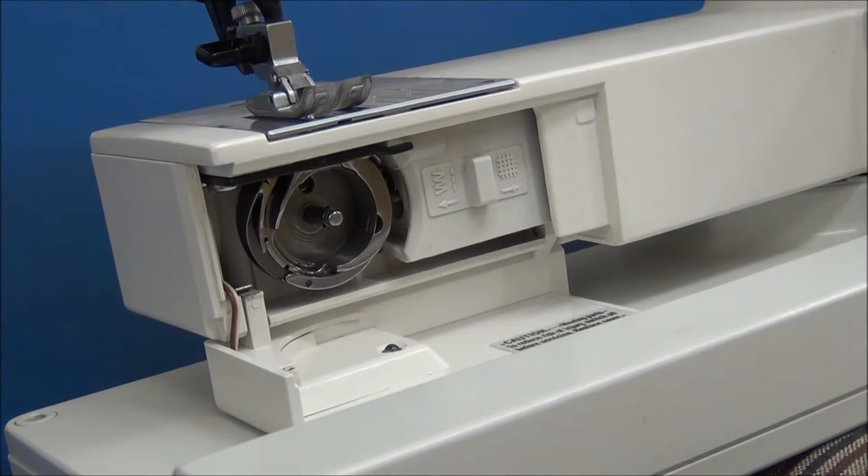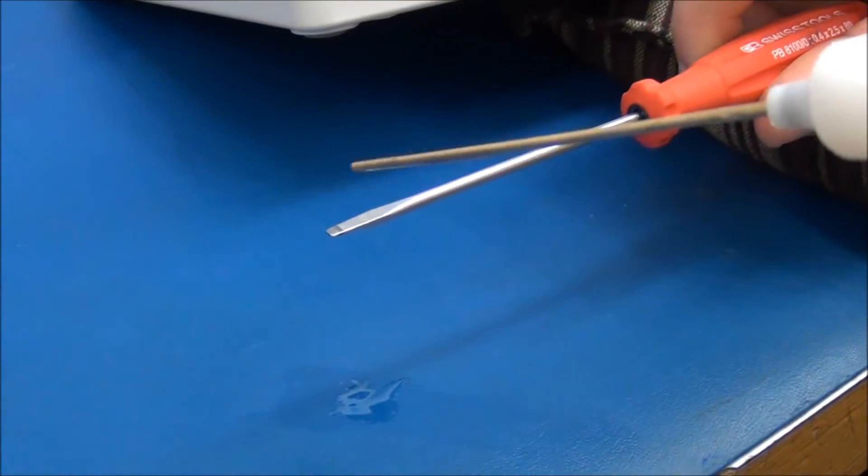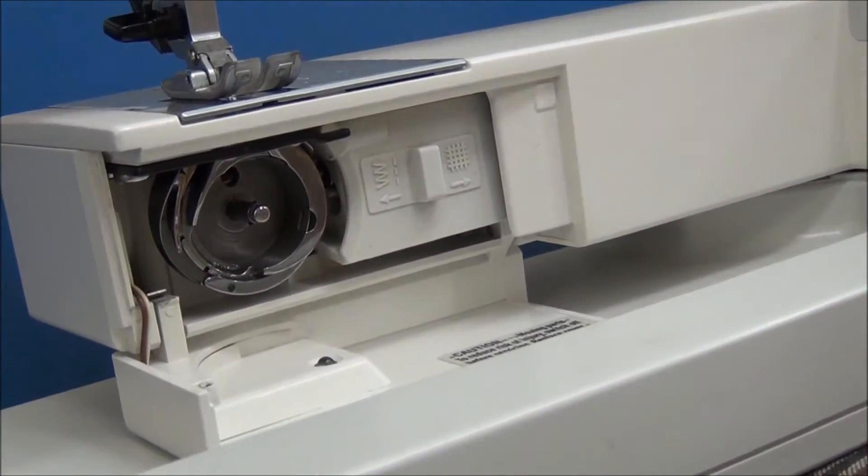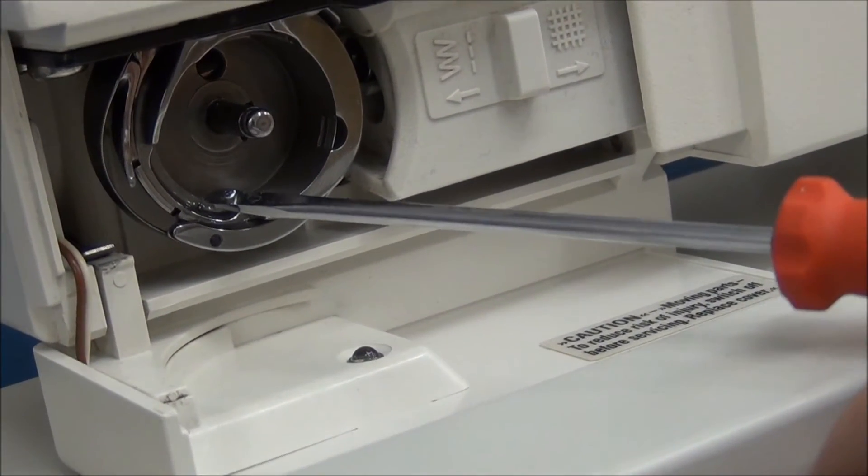After you get all that cleaned off, get a screwdriver, some kind of pointing device, put a drop of oil on it. You're guaranteed not to over oil it this way. You're taking one and only one drop. Put it between the bobbin basket and the hook.